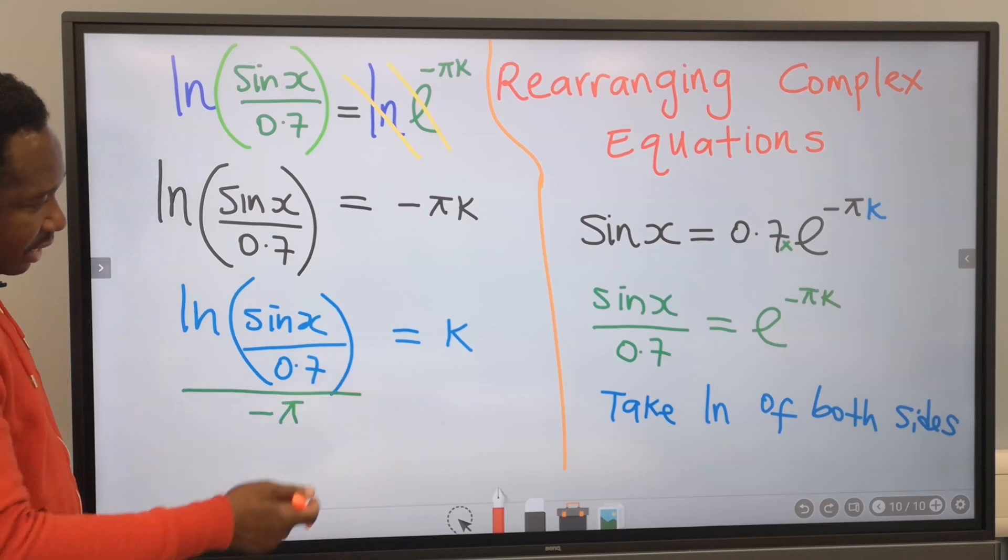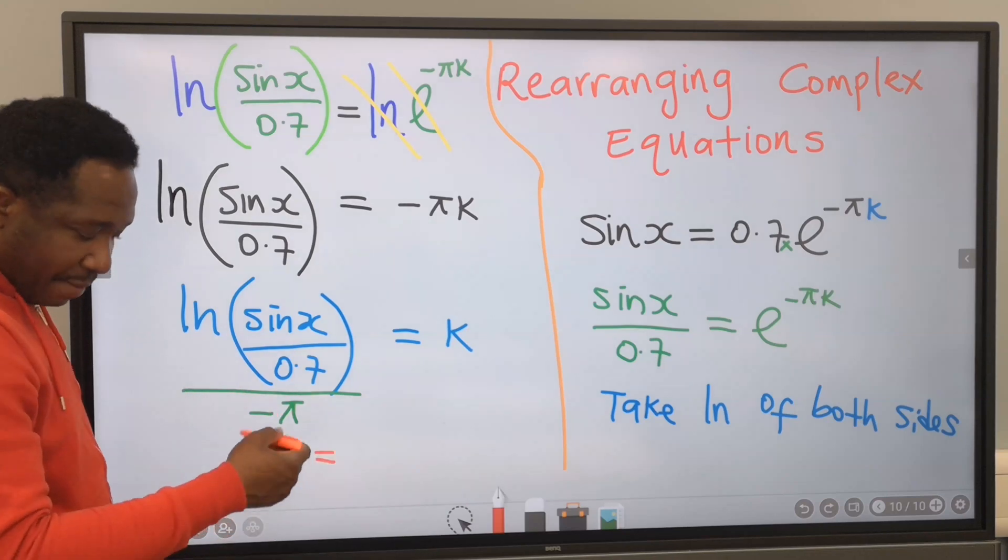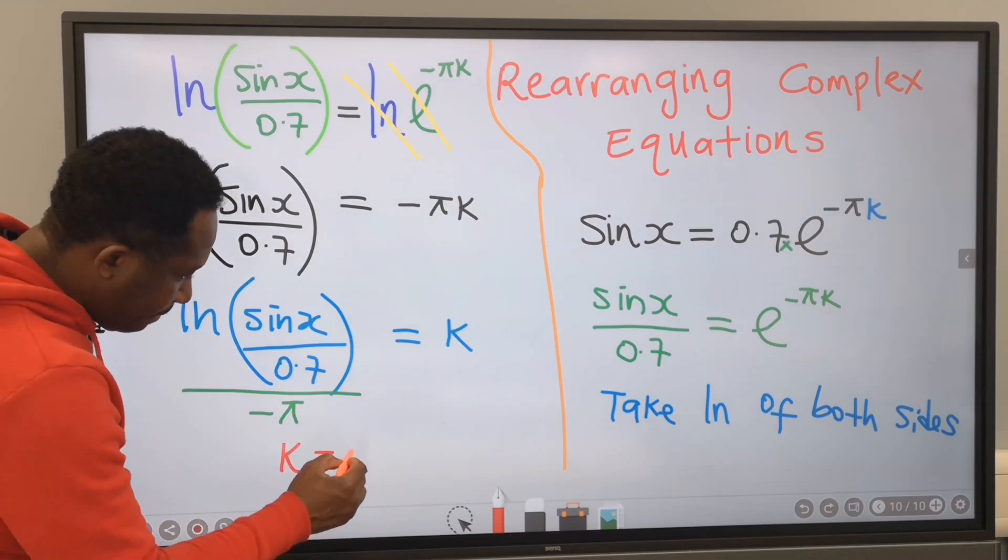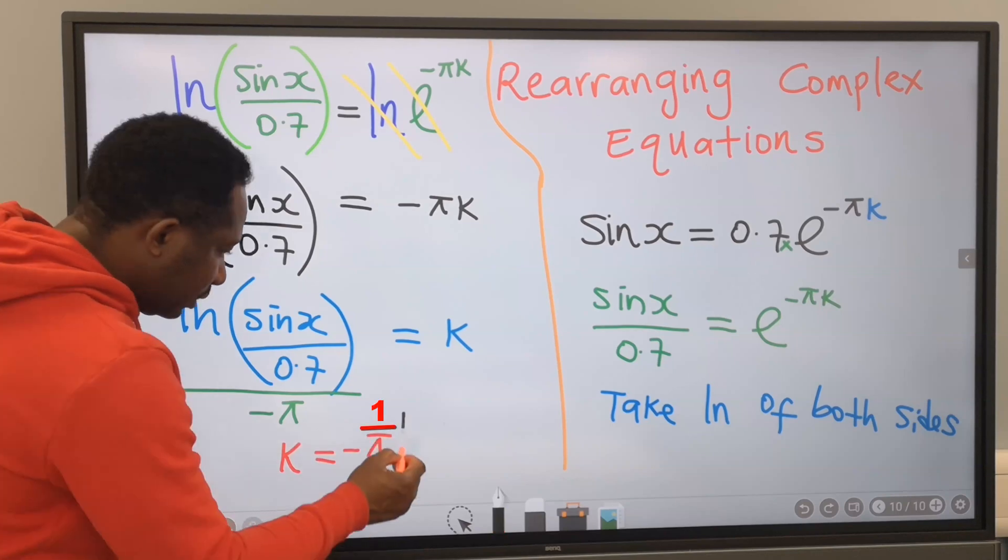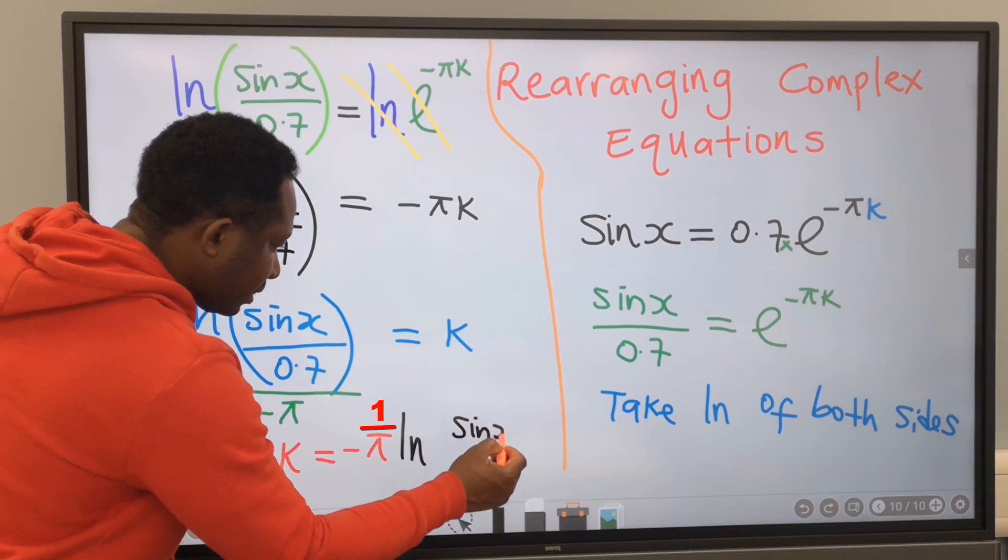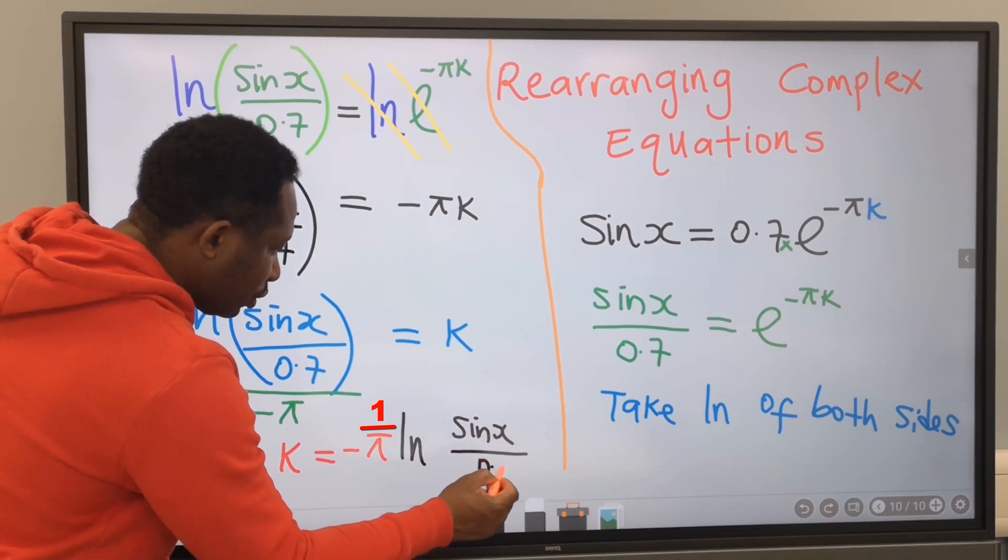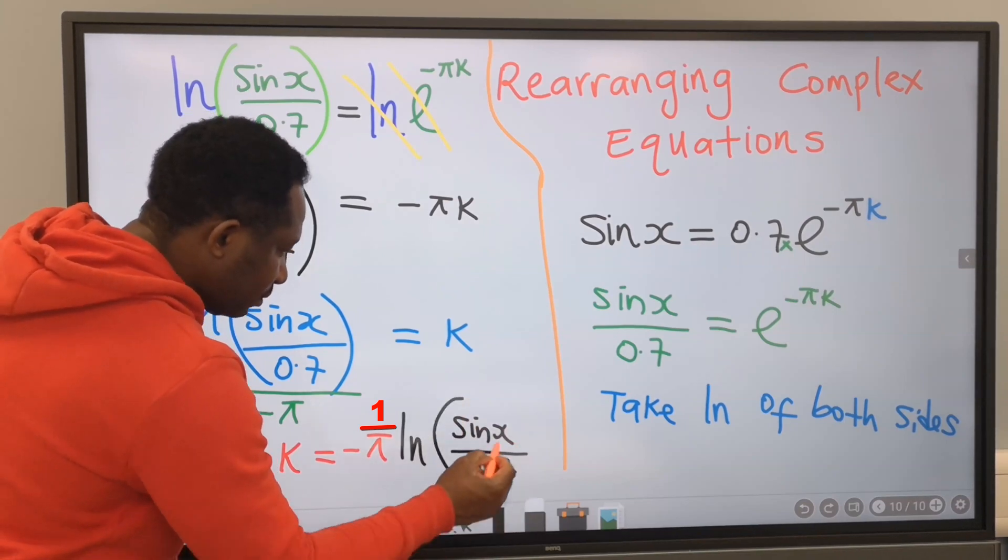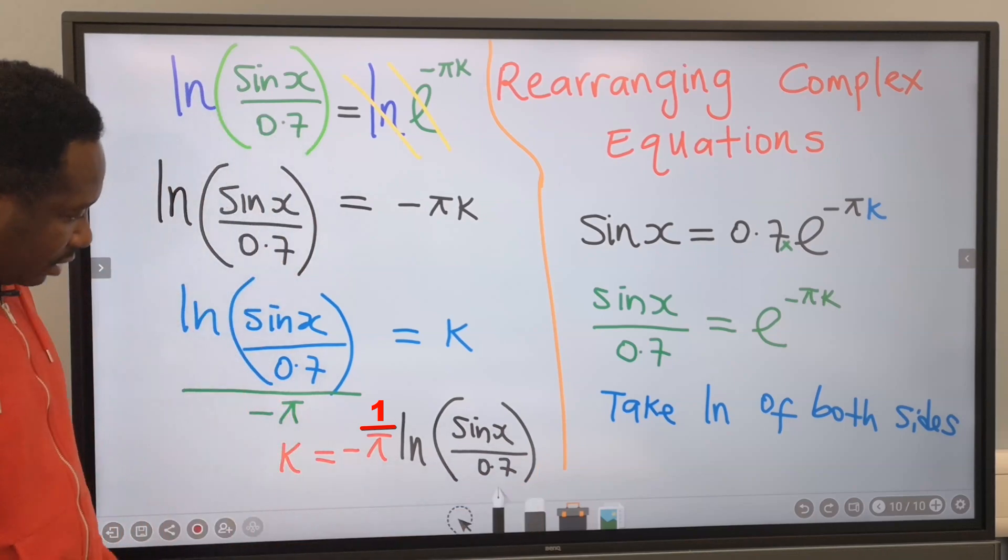k is now isolated. This is our answer. k can be written as minus 1 over pi times the natural log of sin x over 0.7. And this becomes our answer.